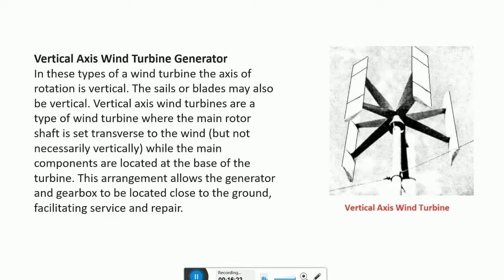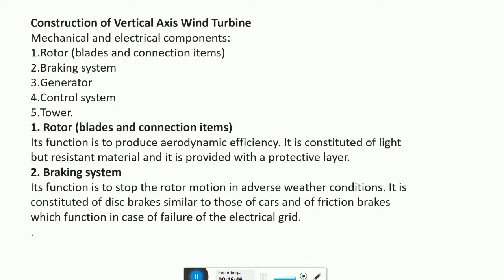This arrangement allows the generator and gearbox to be located close to the ground. The components of a vertical axis wind turbine are: rotor, braking system, generator, control system, and tower. The function of the rotor is to produce aerodynamic efficiency; it is constituted of light but resistant material and provided with a protective layer.